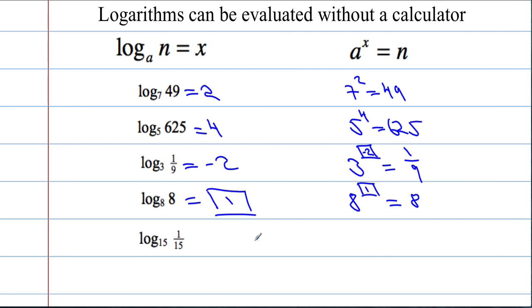And then the next one, what power of 15 gives an answer of 1 over 15? So if I have a power of 15, some power of 15 must give me an answer of 1 over 15. It must be negative 1. So log to the base 15 of 1 over 15 is negative 1.